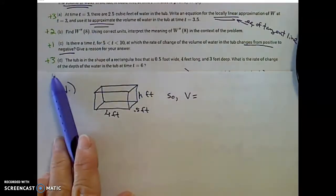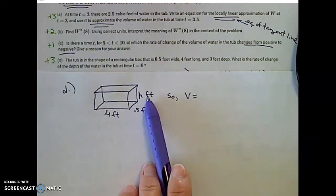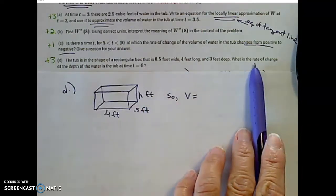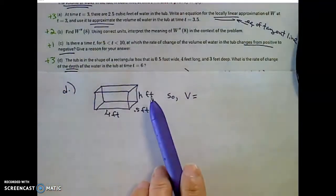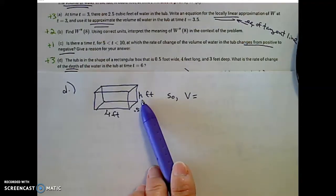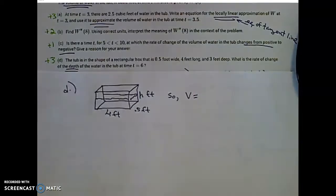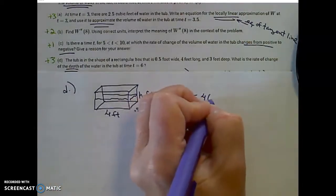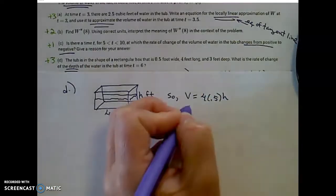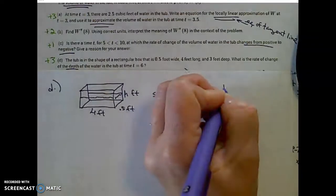This should ring a bell once we start to set this up. Now, the tub is in the shape of a rectangular box. I labeled the dimensions of that box. What is the rate of change of depth of the water at time equal to 6 minutes? So I labeled that as H because that's what's changing, the height. Even though this is 3 feet high, the depth of the water is changing at that time. Notice here the volume is length times width times that changing height. So that implies that volume is equal to 2 times H. Does this ring a bell?